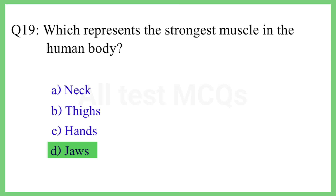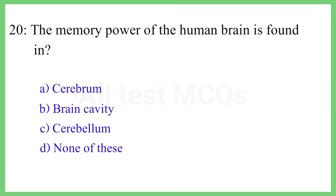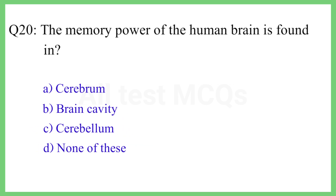Question No. 20. The memory power of the human brain is found in? The correct answer is Option A: Cerebrum.